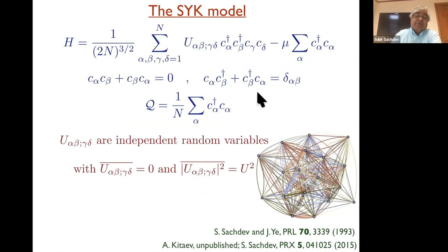Here's the Hamiltonian if you want to see it. So alpha, beta, gamma, delta are labeled these n orbitals. U alpha, beta, gamma, delta is just a random number with zero mean and mean square amplitude U. And then you have a chemical potential that you can vary. And Q is the charge density which varies between zero and one in this model.